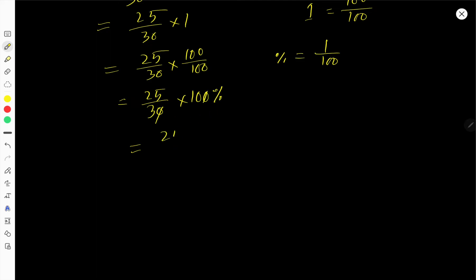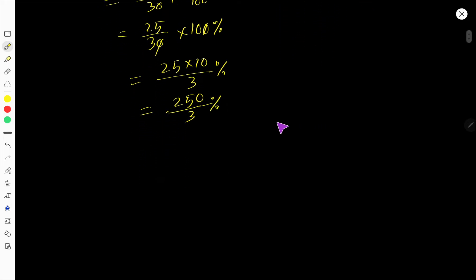That 0, that 0, so we are getting like this. Now let us divide 250 by 3. 3 goes into 25 eight times. 24, 1, 10. 3 goes into 10 three times. 3 times 3 is 9, subtract 1.